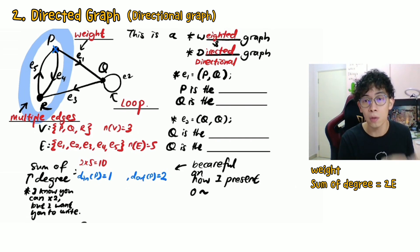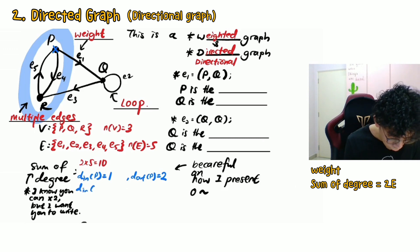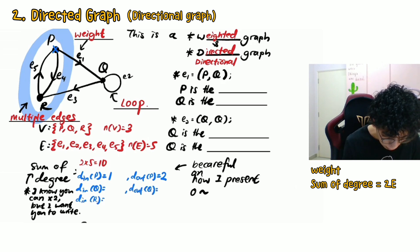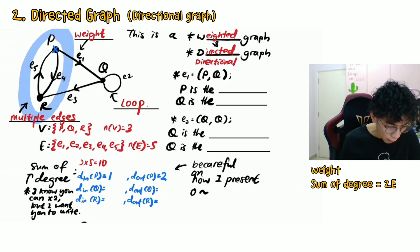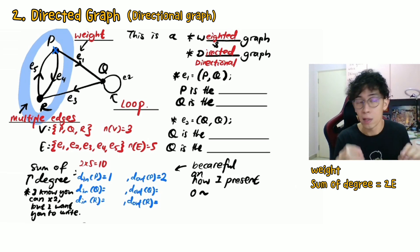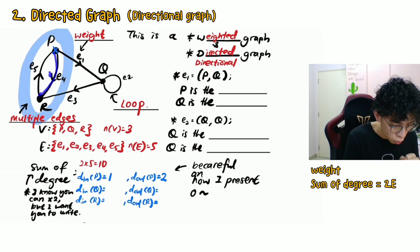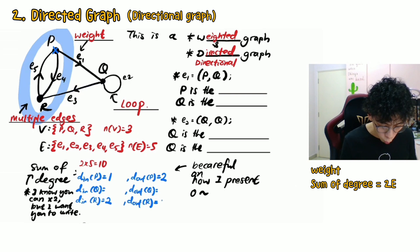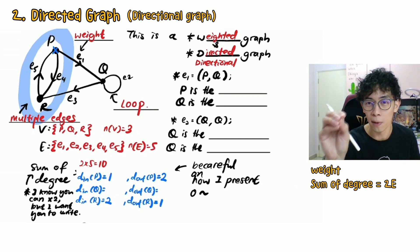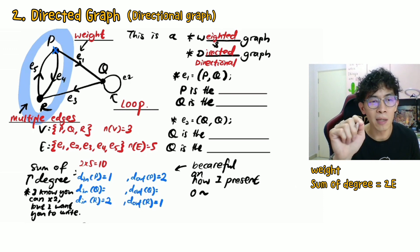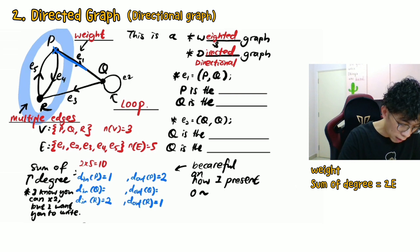Now let's look at vertex R. How many lines shoot towards R? Two lines go into R. How many lines go out of R? One — which is E5. Now for vertex Q, let's look at the simple edges first. How many lines shoot towards Q? One line going in, and one line going out.